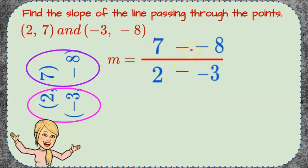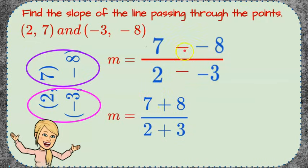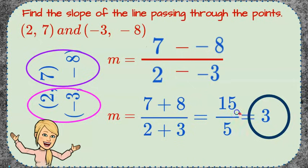Subtracting a negative means we add the opposite. So seven minus negative eight becomes seven plus eight, and two minus negative three becomes two plus three. Seven plus eight is fifteen, two plus three is five, and fifteen divided by five is three. So the slope of the line passing through these two points is positive three, meaning our line is rising left to right.